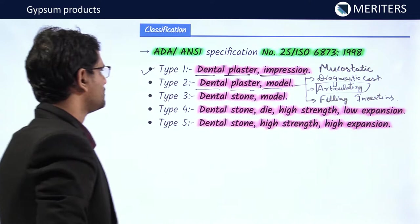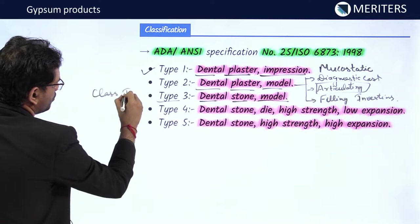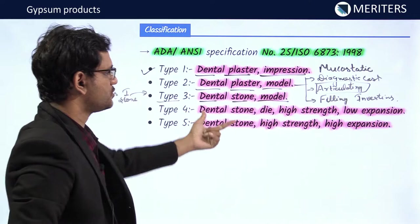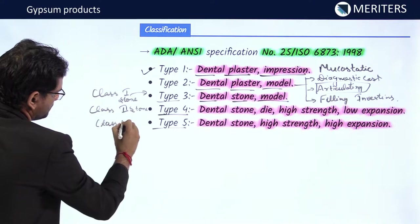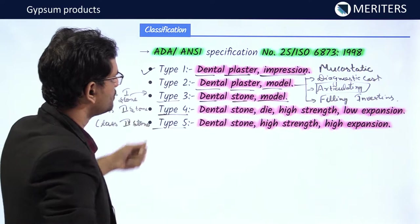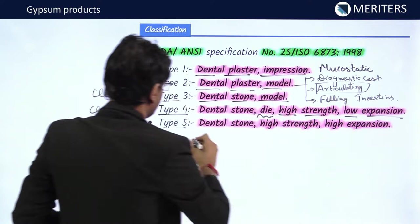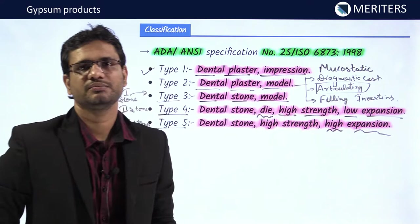Type 3 is known as dental stone, also called class 1 stone. Type 4 is known as class 2 stone, which is dental stone with high strength but low expansion. Type 5 is class 3 stone — dental stone with high strength and high expansion.